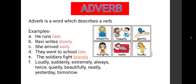Till here we came to know about noun, pronoun, verb, and adverb. Noun represents the name of person, place, animal, bird or thing. Pronoun is used in the place of a noun. Verb shows the action of a noun or pronoun in a sentence. Adverb describes a verb — it tells us how the work is going in a sentence. The remaining four parts of speech we will discuss in another video. Thank you.